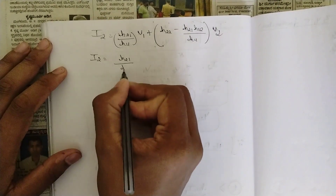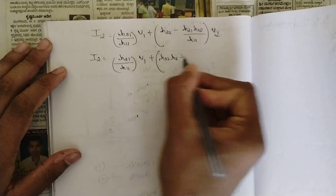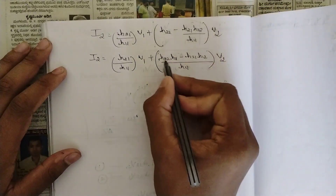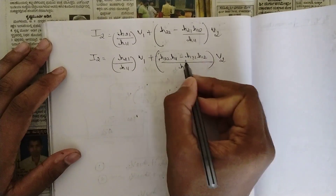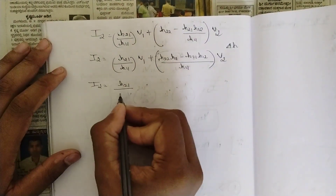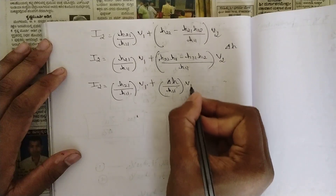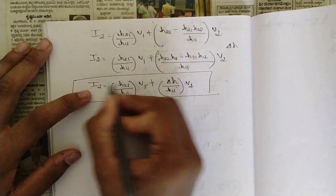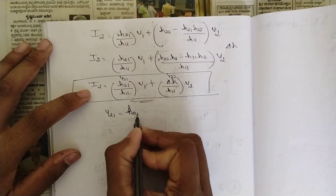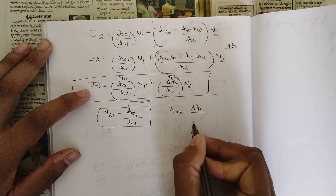Grouping the V2 terms: the coefficient of V2 becomes (H22·H11 minus H21·H12) / H11, which equals delta H / H11. So I2 = (H21/H11)·V1 + (delta H/H11)·V2. Comparing with I2 = Y21·V1 + Y22·V2: Y21 = H21/H11, and Y22 = delta H/H11.